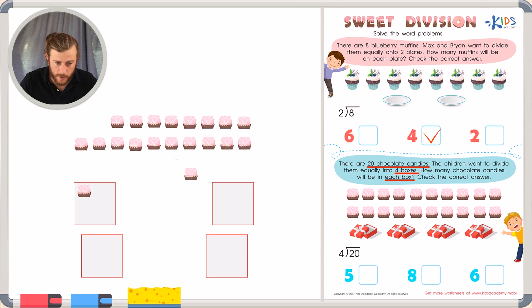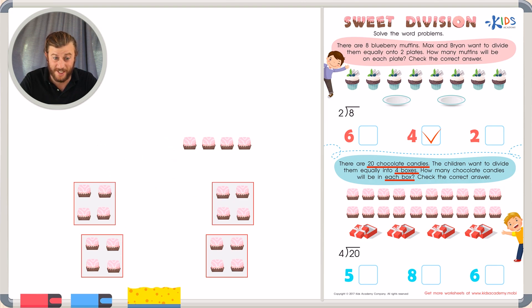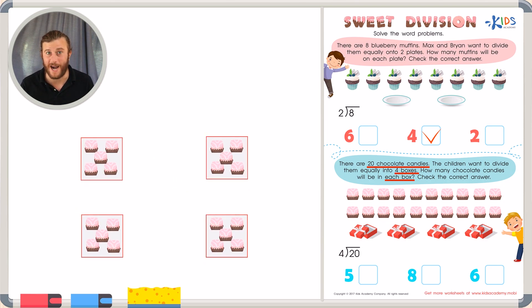One, two, three, four. That's one candy in each box. Five, six, seven, eight, nine, ten, eleven, twelve, thirteen, fourteen, fifteen, sixteen, seventeen, eighteen, nineteen, and twenty. We ended on the last box. So that makes me think there's an equal number of chocolate candies in each box. But let's count them just to be sure.